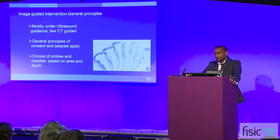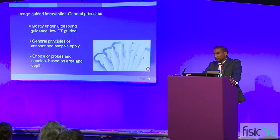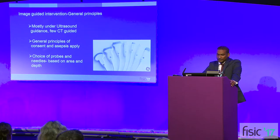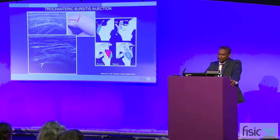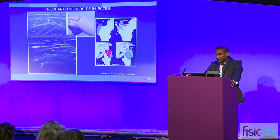Hip intervention is very commonly performed and most of these procedures are done under ultrasound because structures are quite easily accessible. Very few CT or X-ray fluoroscopy-guided techniques are performed — sacroiliac joint injections or lower lumbar spine interventions are usually performed under CT or X-ray fluoroscopy. The most common injection we get asked to perform is a trochanteric bursal injection. We have two tendinous insertions: gluteus minimus inserting into the anterior facet, whilst gluteus medius inserts into the lateral and posterior superior facets. We have three anatomical bursae: the subgluteus medius, subgluteus minimus, and the trochanteric bursa posteriorly — knowledge of this anatomy is important to target the inflamed bursa appropriately.